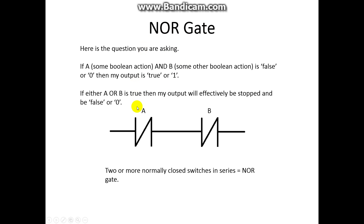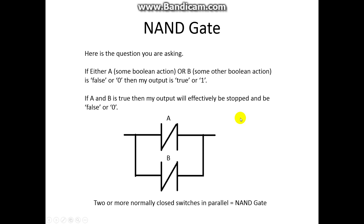Now we have something called a NOR gate. A NOR gate means NOT A AND NOT B, so neither of these can be true for information to pass. I know that looks a little backwards — you would think that it would be in parallel, but it's in series. The next thing we have is a NAND gate. If this is not true and this is not true, then we get a NAND gate.